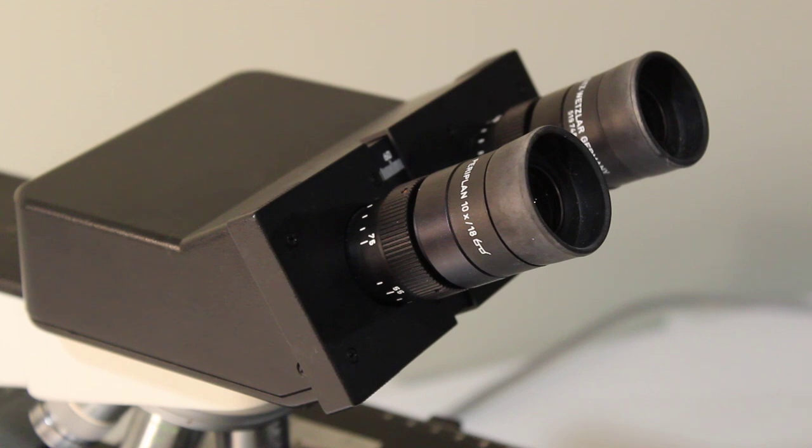The last component of your microscope's optical system are the oculars or the eyepieces, the things that you actually look through. These do two different things.